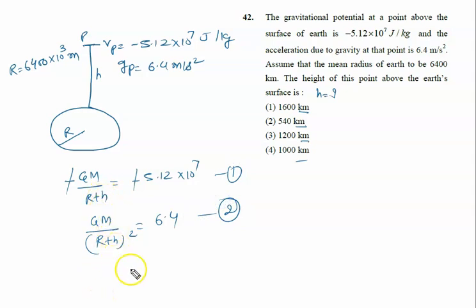If we divide equation 1 by equation 2, GM will cancel out and r plus h power is also canceled. So r plus h is given by 5.12 times 10 raised to the power 7 divided by 6.4.